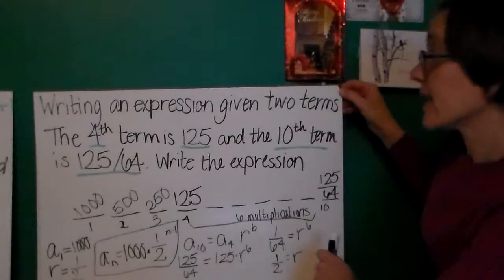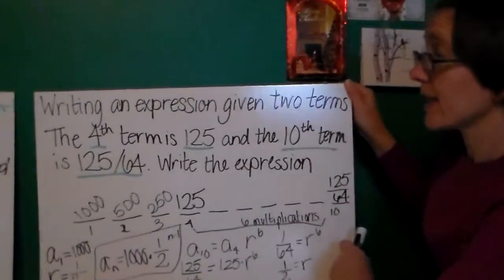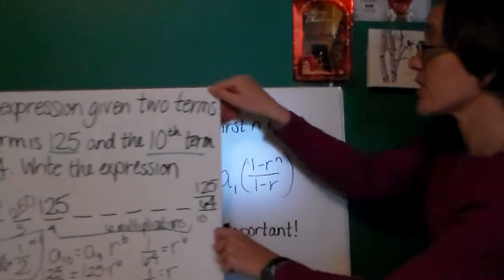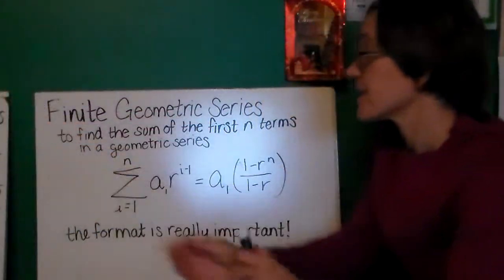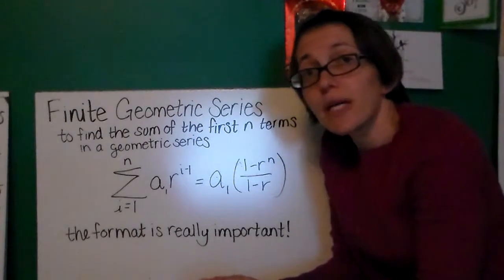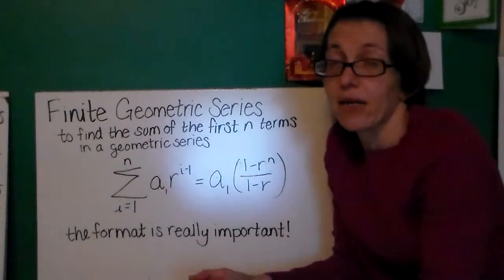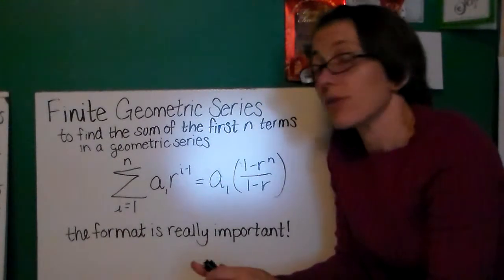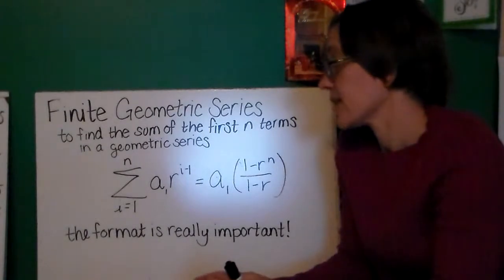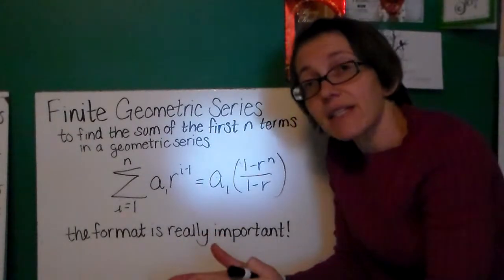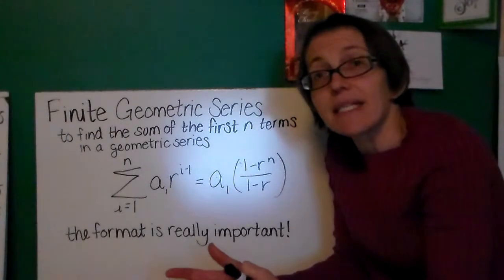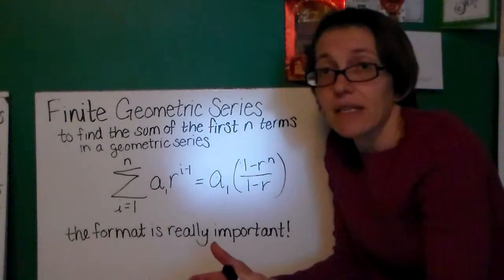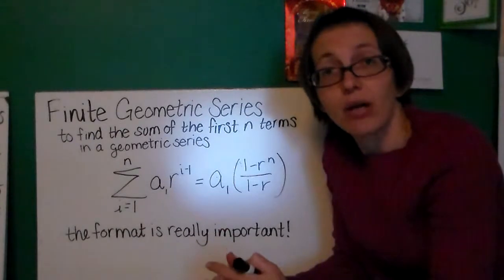So, we've done writing an expression given two terms, writing just a general expression when we're already given some information. Let's talk about the geometric series. Now, there's two cases that we can consider. The first, that's more general, is the finite geometric series. A finite series, as we've discussed before, is a series that has an end. It has a specific number of terms.